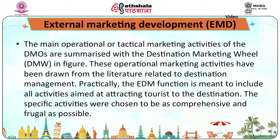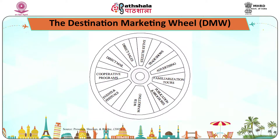First is the external marketing development, EMD. These operational marketing activities have been drawn from the literature related to destination management. They are put in place after the premeditated marketing activities of image definition, branding and positioning have been completed. Practically, the EDM function is meant to include all activities aimed at attracting tourists to the destination, chosen to be as comprehensive and frugal as possible. These activities have an outward orientation in that their aim is to influence the actions of persons outside the destination. Recognizing that marketing entails much more than just selling or advertising, promotion is usually the DMO's major activity and budget item. After developing a marketing plan, the DMO can use different promotion tools.